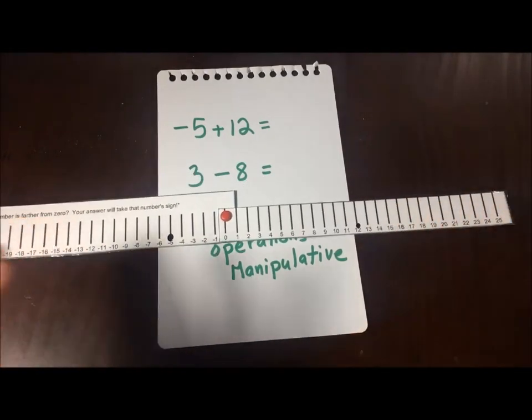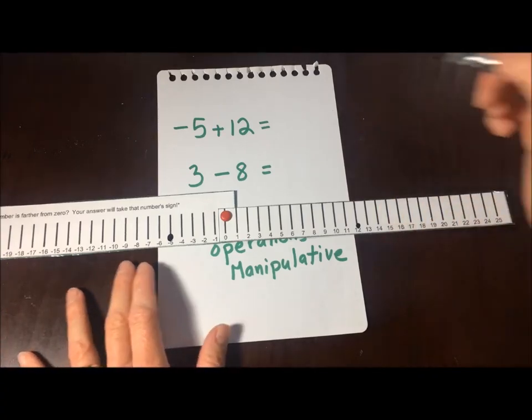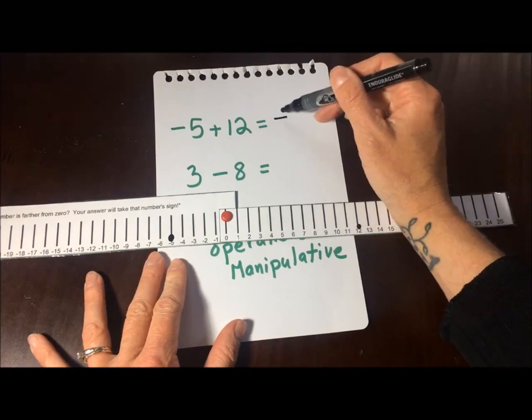And you ask, well, which number is farther from zero? Obviously 12 is farther from zero. I shouldn't be writing on paper with this, but I'm going to. So the answer is going to be positive because 12 is farther away.